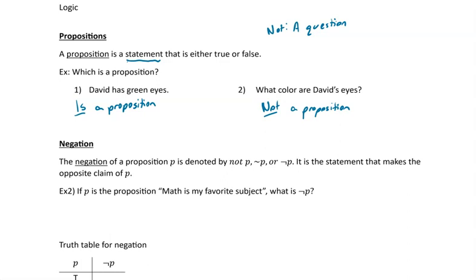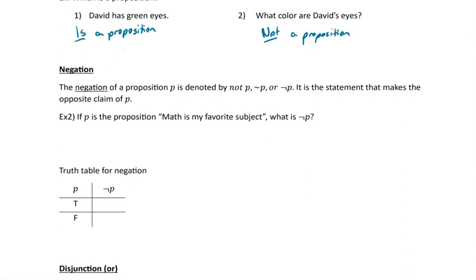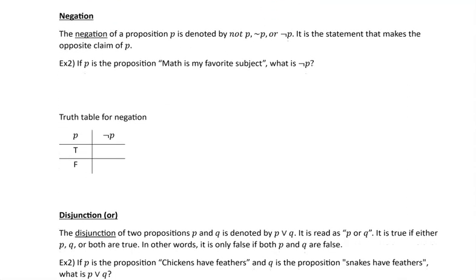Now we'll look at things we can do with propositions. We start with negation. The negation of a proposition P is denoted by 'not P' (using one of two common symbols). It is the statement that makes the opposite claim of P. So if P is 'math is my favorite subject,' then not P is 'math is not my favorite subject.'